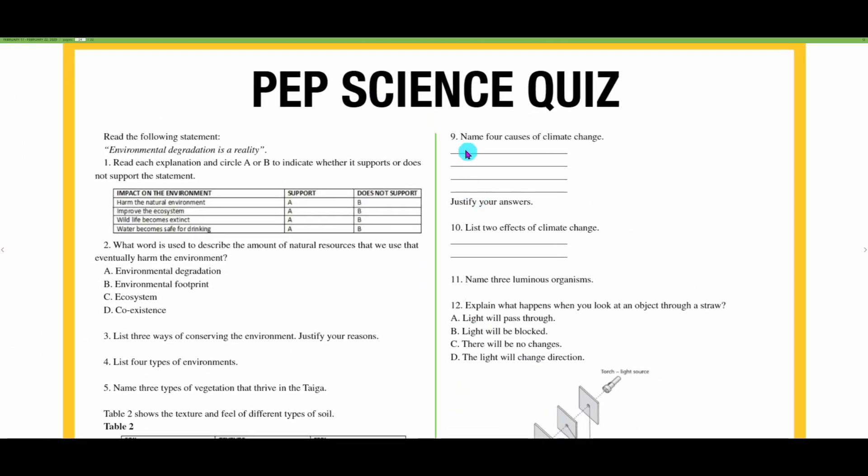Number nine: name four causes of climate change. If Earth's orbit changes so we get closer to the sun, we can have climate change. The tilt of the Earth on its axis is another reason. Some scientists are measuring that Earth is tilted more on its axis than before, which means during summer the Earth is tilted more towards the sun, so summers get warmer.